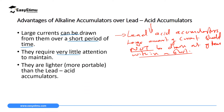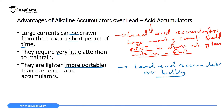The third advantage is that they are lighter and portable. Portable means you can carry them around easily since they are not heavy and bulky. Lead acid accumulators, by contrast, are very bulky, meaning they are not easily portable and cannot be carried around conveniently.